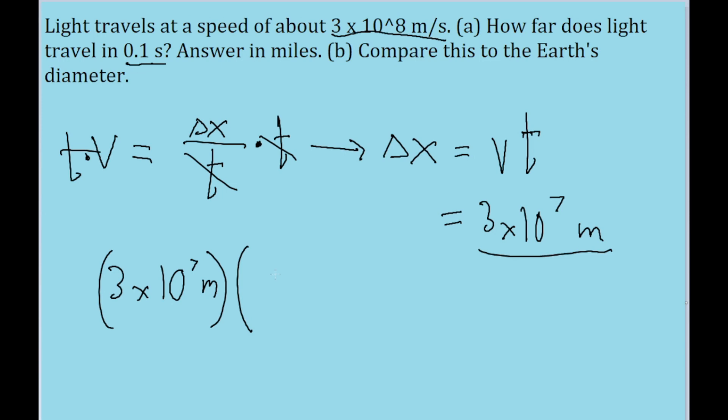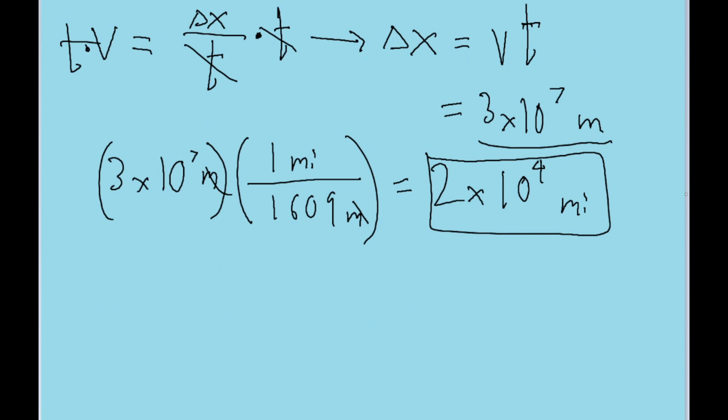So we're just going to have to do a basic unit conversion. You might want to look up the fact that 1 mile is equal to around 1,609 meters. And we'll use a chain link conversion where the meters will cancel out. So we multiply 3 times 10 to the power of 7 by this fractional term right here. And if you put that into your calculator to do the conversion, we find a new distance of about 2 times 10 to the power of 4 miles.